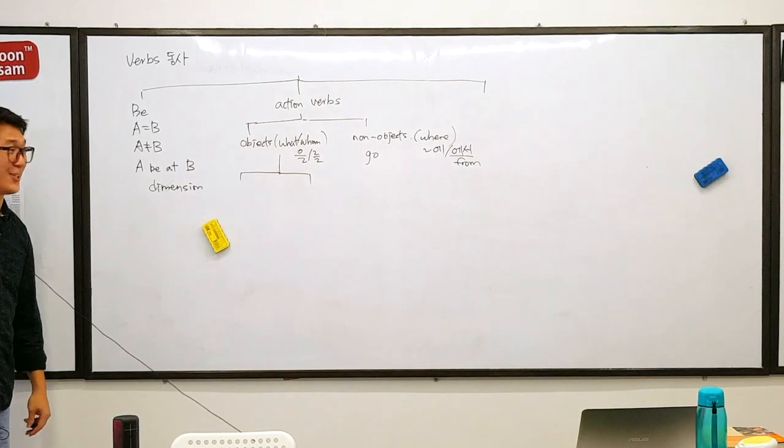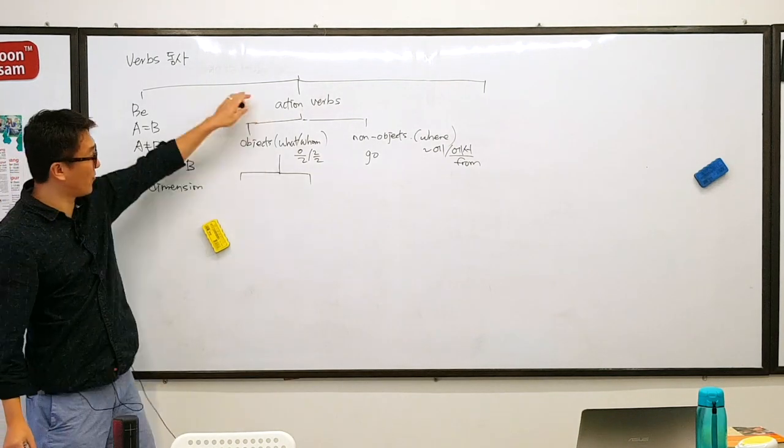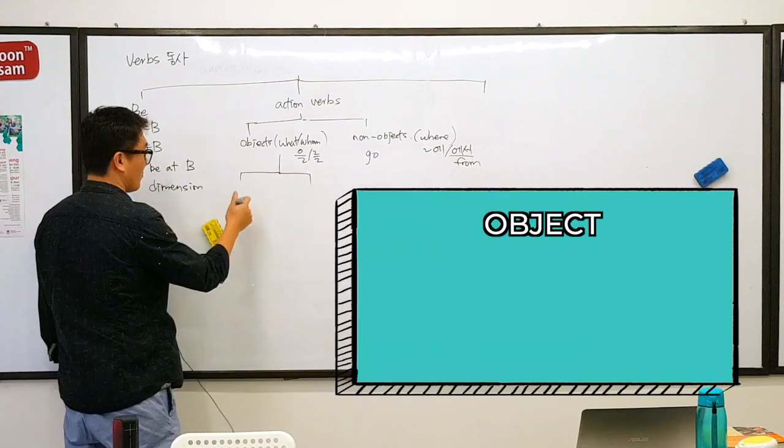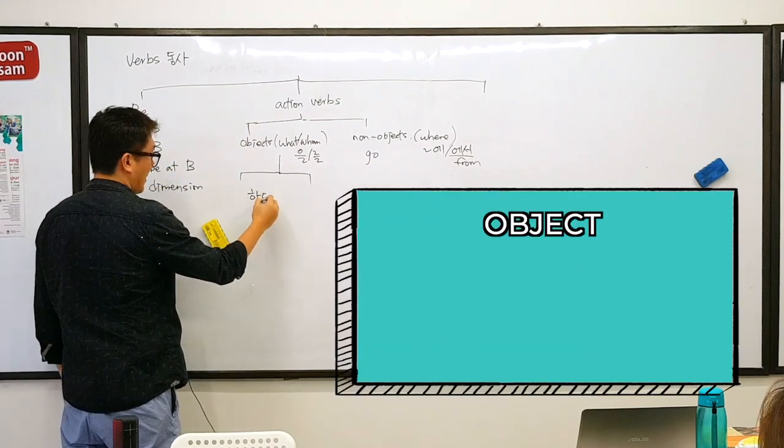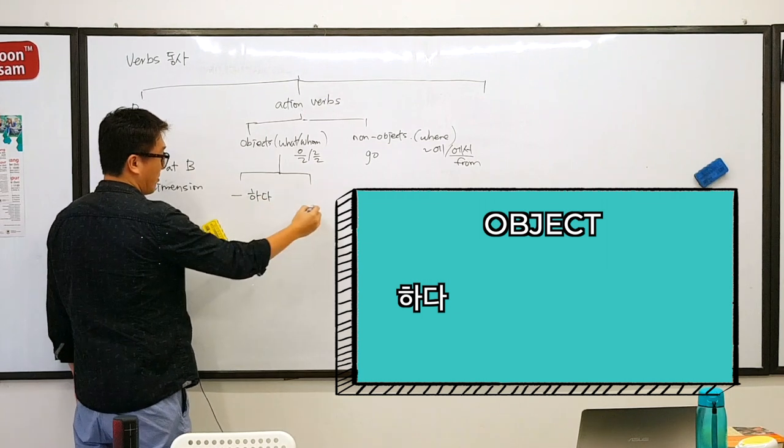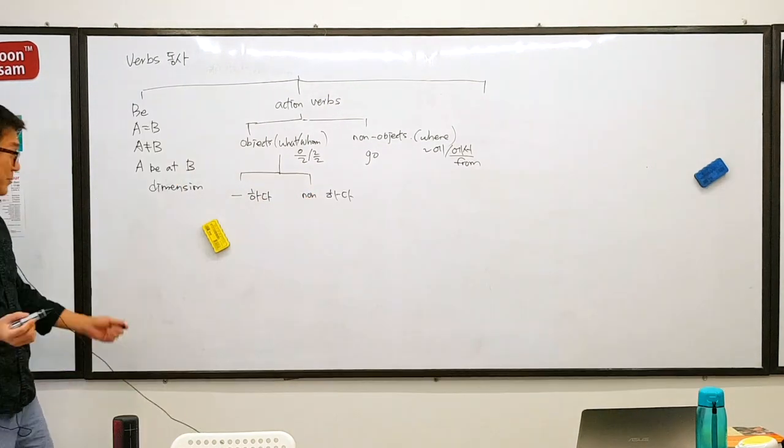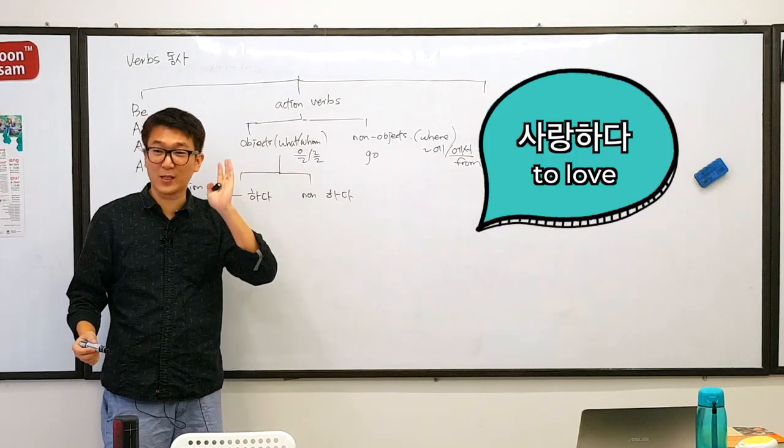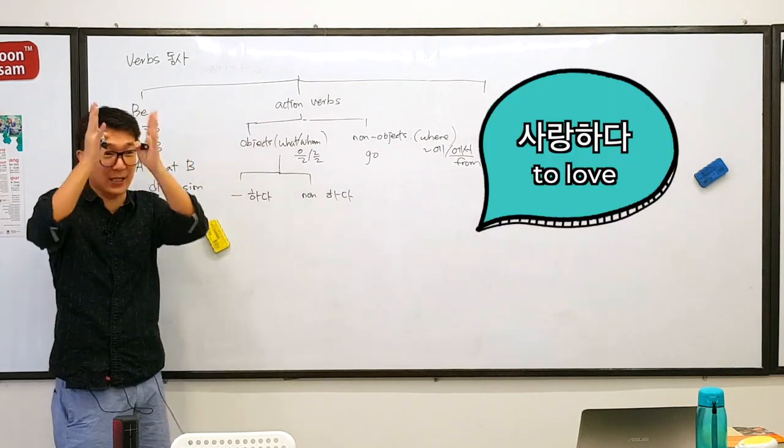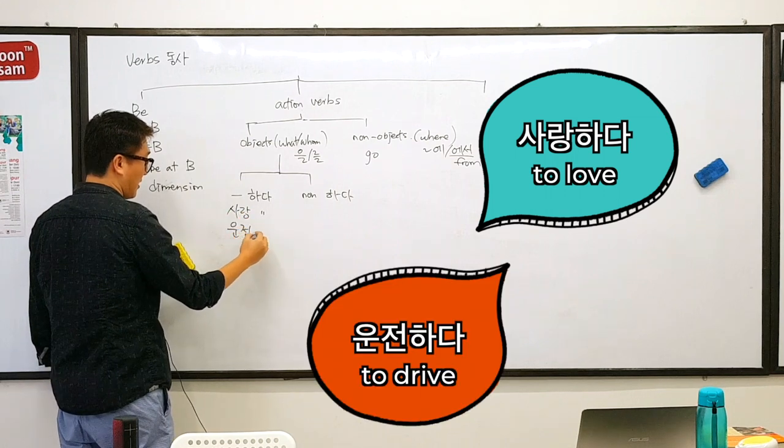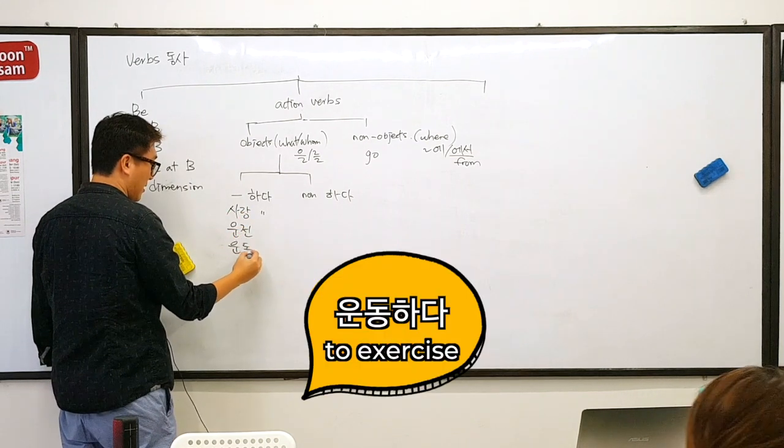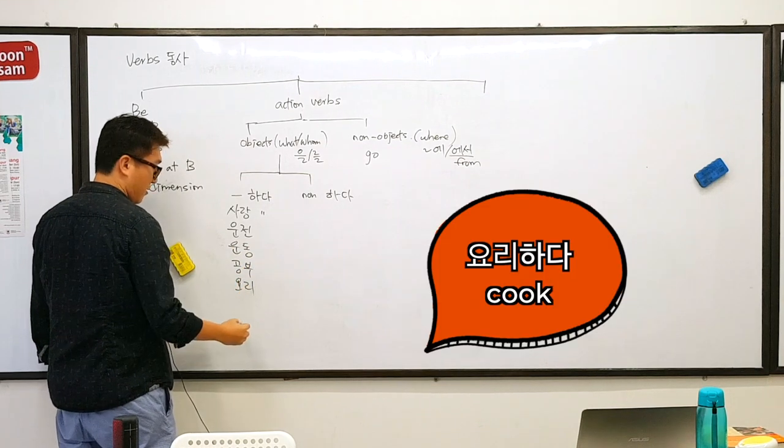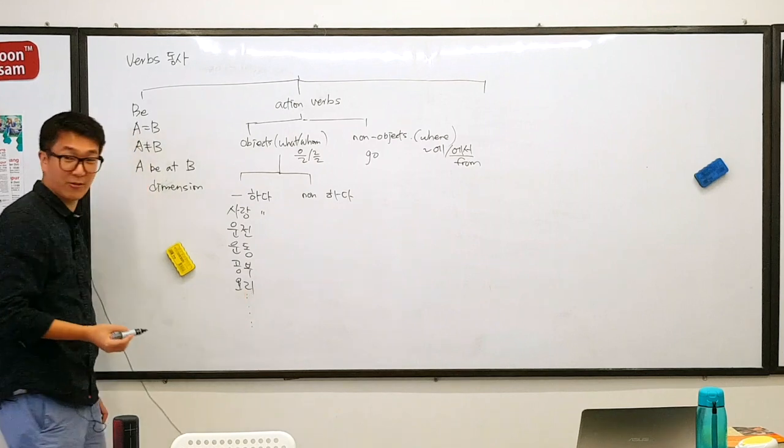under these. Under these. Action verbs that particularly requires an object. There are two types. Which is, first one is. 하다 verb. 하다 verb. And non-하다 verb. 하다 verb is basically, like, 사랑하다. Anything that comes with 하다. It comes at the back is 하다. 사랑하다. 운전하다. 운동하다. 공부하다. 요리하다. There are many. There are tons of the 하다 verbs.